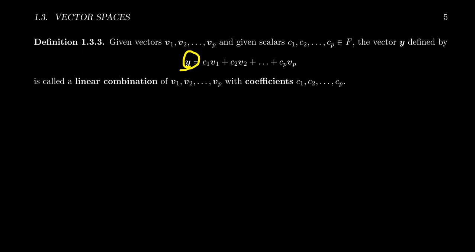So a linear combination is any expression of vectors which combines together these additions and scalar products of these things. Now, it's very possible, of course, that the scalars here could just be one.